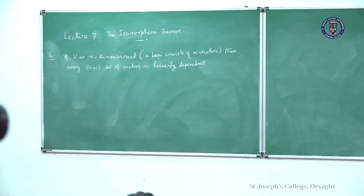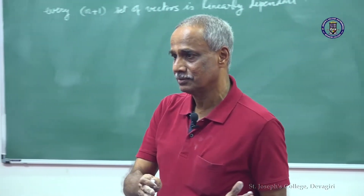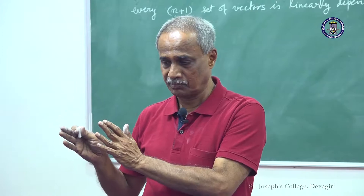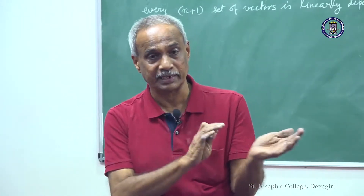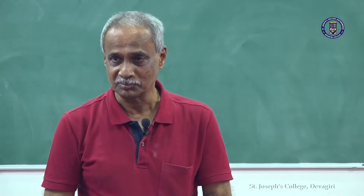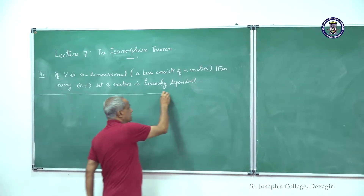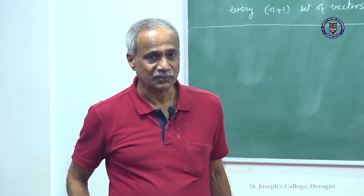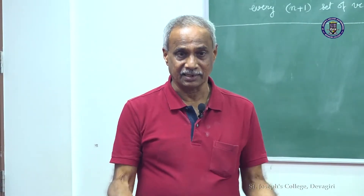Now we look at the following. You may have several vector spaces of dimension n over the same field. When comparing two vector spaces, the field should remain the same, otherwise there will be problems. So what we are looking at is various vector spaces over the same field having the same dimension. In that case, you compare them — are they identical in structure, abstractly are they the same?